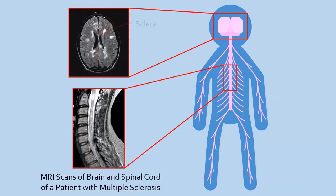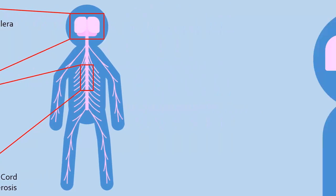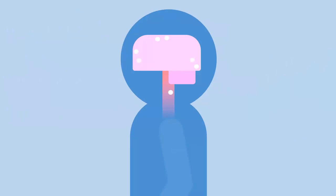This damage appears as multiple scars, or sclera, in the brain and spinal cord, which is how multiple sclerosis got its name. Loss of oligodendrocytes and myelin result in a variety of debilitating symptoms depending on what parts of the brain were demyelinated.